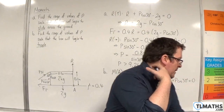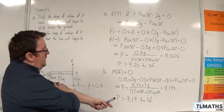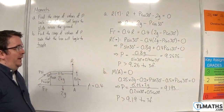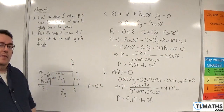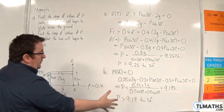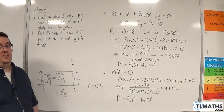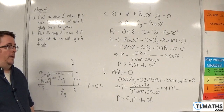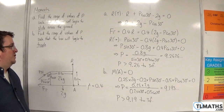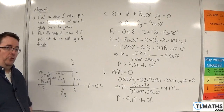The key point is that 9.19 is less than 9.26. So that's telling us that the box is going to start toppling before it starts to slide. It will topple first, so it won't actually slide across the ground.